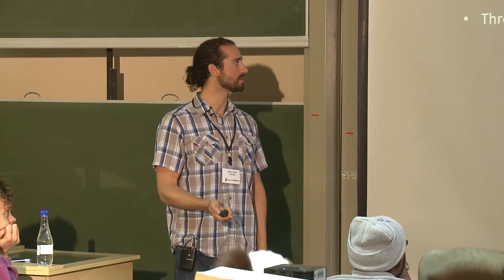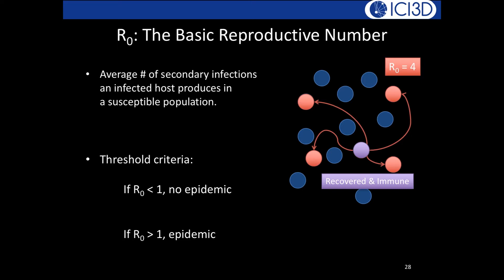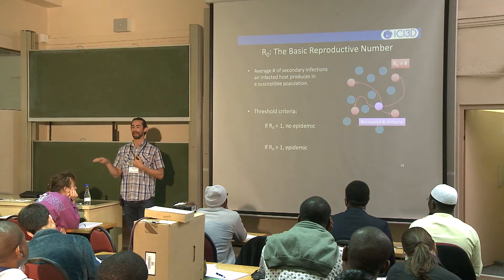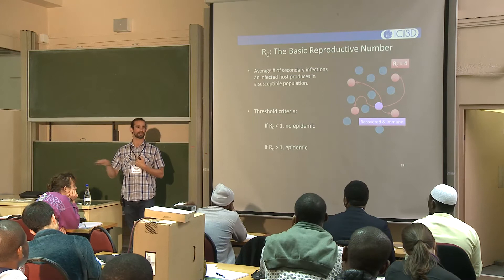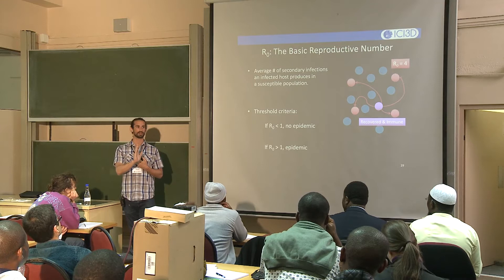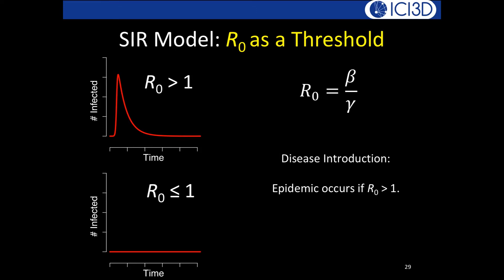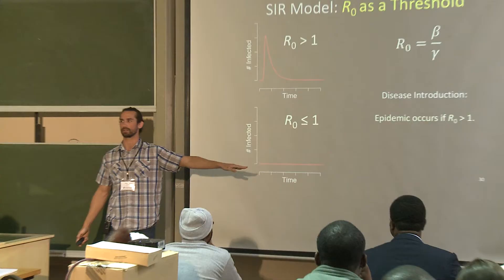R0 tells us whether an infection can start an outbreak. If R0 < 1, an outbreak won't start — infected individuals aren't replacing themselves. If R0 > 1, the epidemic takes off. This is why R0 tells us the propensity for a disease to invade a population.